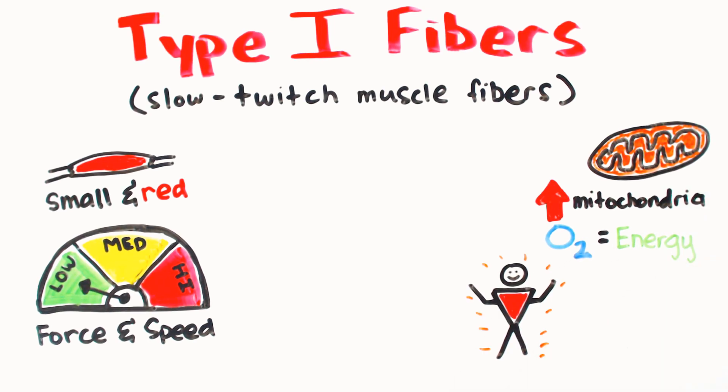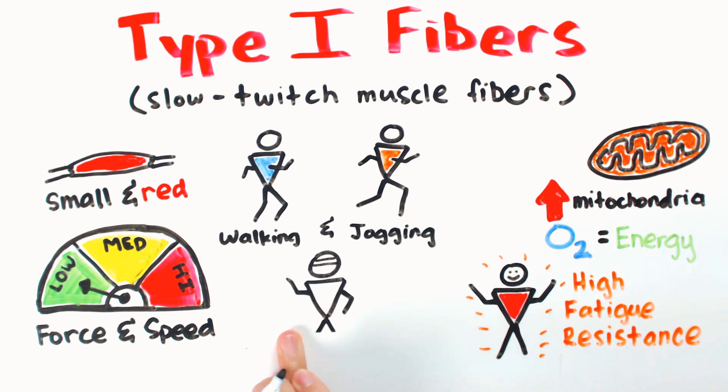Although the force generated is fairly small, Type 1 fibers are highly fatigue resistant, allowing it to be active for long periods of time. They are the primary fibers used during low intensity activities with steady oxygen consumption, such as walking, jogging, or aerobics.